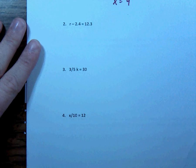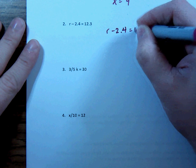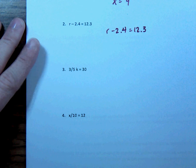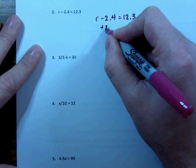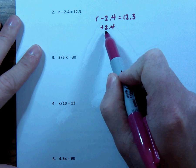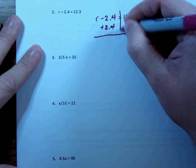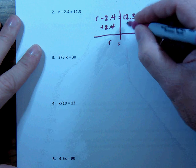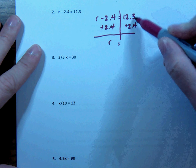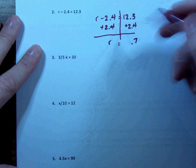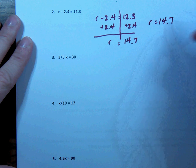On the second question, I have r minus 2.4 is equal to 12.3. I want to do the opposite — this is r minus 2.4, so I'm going to add 2.4. Minus 2.4 plus 2.4 makes zero, so r is alone. On the other side, 12.3 plus 2.4: 0.3 plus 0.4 is 0.7, and 12 plus 2 is 14. So r equals 14.7.